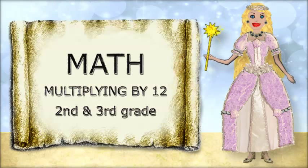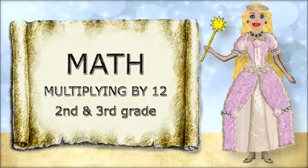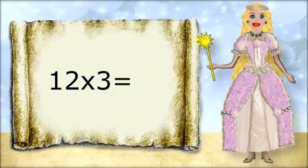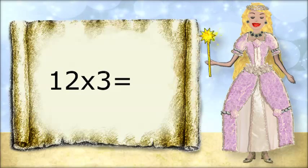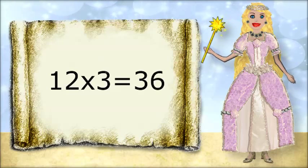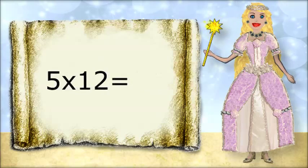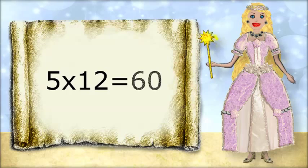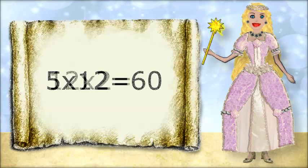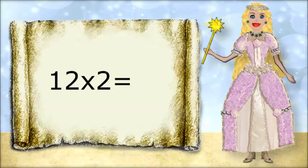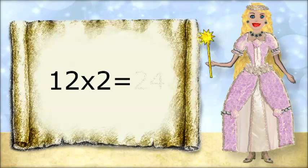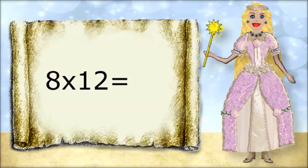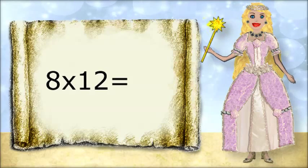Math: multiplying by 12, second and third grade. You have about nine seconds to answer. 12 times 3 equals 36. 5 times 12 equals 60. 12 times 2 equals 24. 8 times 12 equals 96.